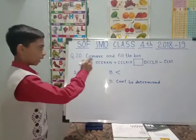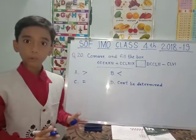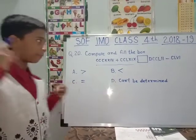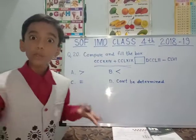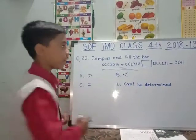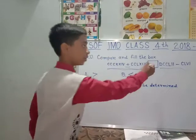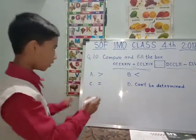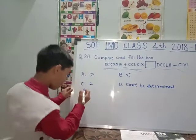Next question: Compare and fill in the box. They have given Roman numerals and we have to convert them into number form, add them, and use the correct comparison sign. First, I will convert the Roman numerals. CCC means 100 multiplied by 3, which equals 300. XX means 10 times 2, which equals 20. IV means 5 minus 1, which equals 4. So I will write 300, 20, and 4.